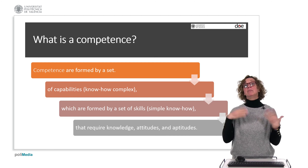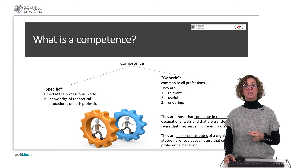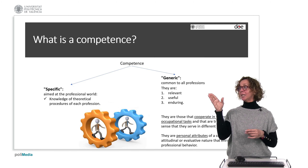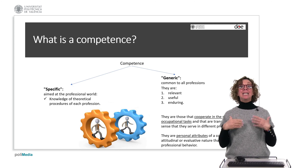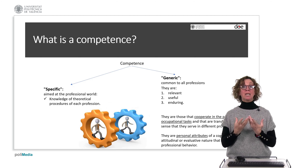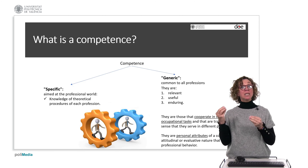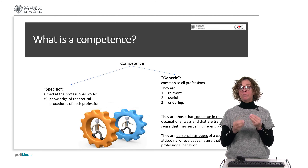Within competencies, we can differentiate between generic and specific. Specific competences are those aimed at the professional world, covering theoretical knowledge and procedures of each profession. Generic competences are common to all professions; they cooperate in the implementation of occupational tasks and are transferable, meaning they serve across different professional areas.